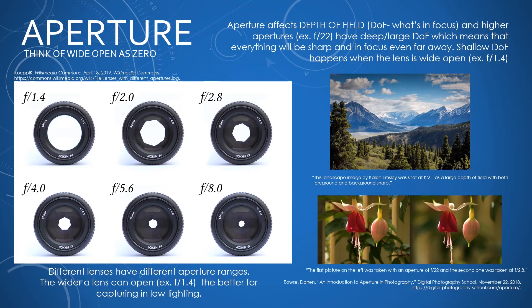Higher apertures like f 22 have a deep or large depth of field, meaning everything will be sharp and in focus even if it's far away. Shallow depth of field happens when the lens is closer to wide open, like f 1.4. The landscape image on top was shot at f 22, so it has a very large depth of field with both foreground and background in focus. The comparison images show the left shot at f 22 and the right at f 2.8 — you can really see the difference, with the right image having very shallow depth of field focused on the flowers in the foreground.